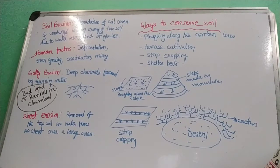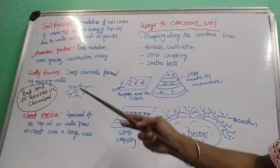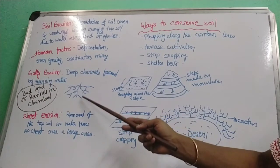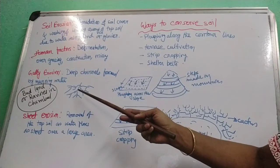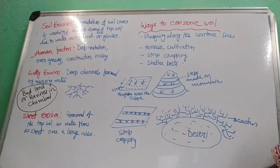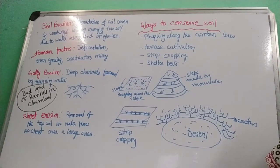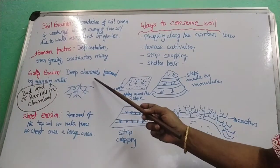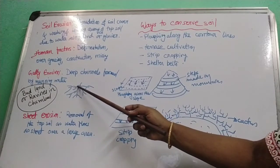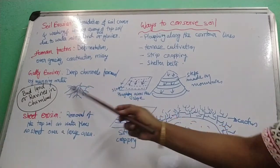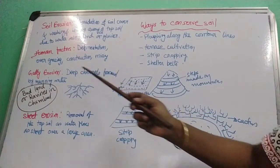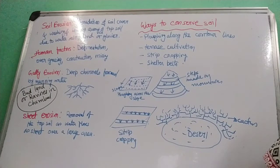Gully erosion occurs when running water forms deep channels — gullies — cut into the soil. These look like very small drainage patterns or tiny rivers. As a result, topsoil is removed along the channels, making the land into badlands or ravines. In the Chambal basin there are huge areas where gullies cut deep into the soil.